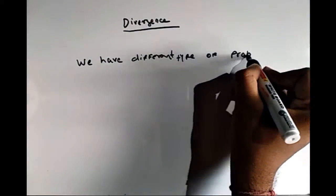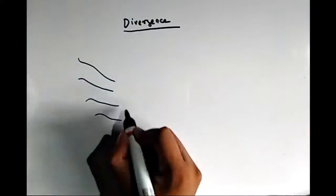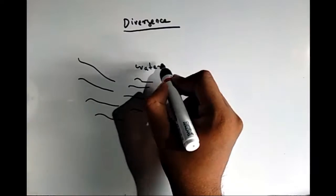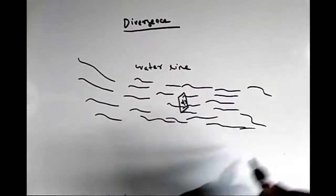Divergence of a vector field. We have many problems in physics where we need to calculate how much liquid is leaving a unit volume in unit time, or when working with a vector field or scalar field.